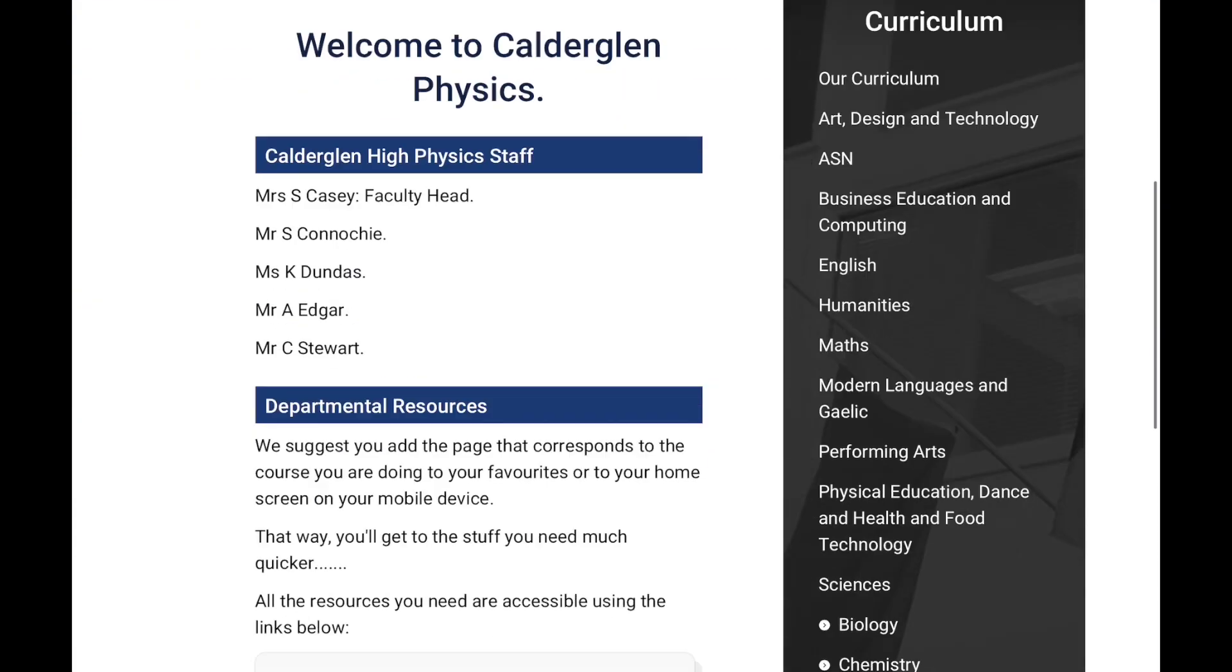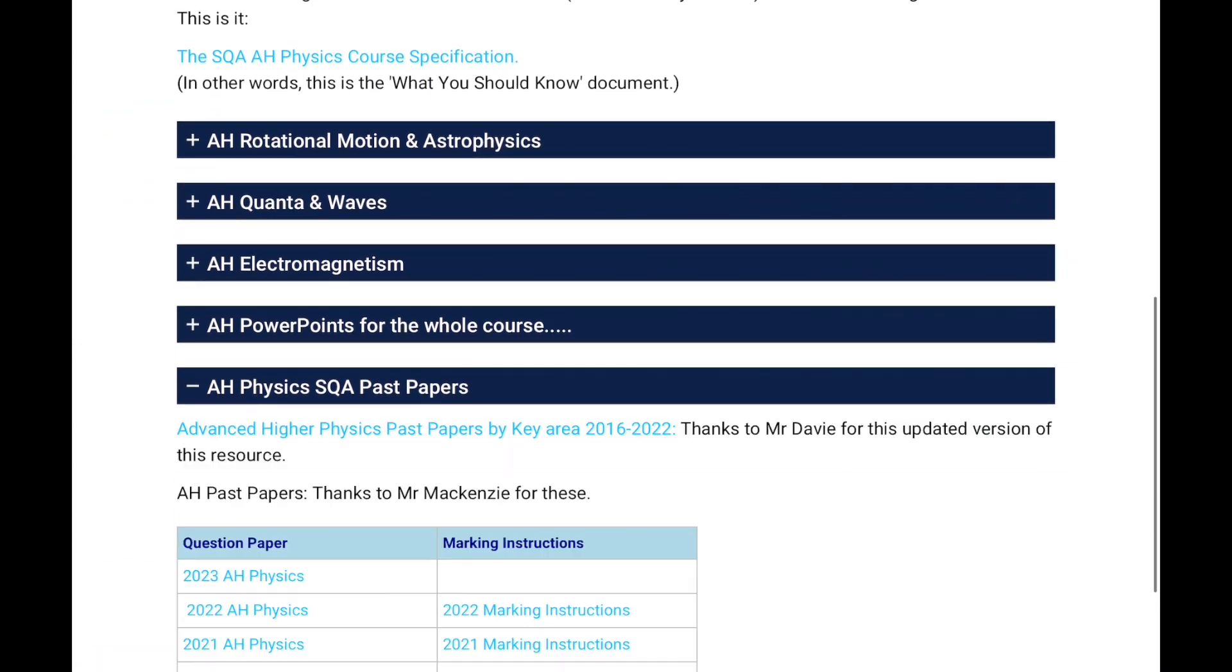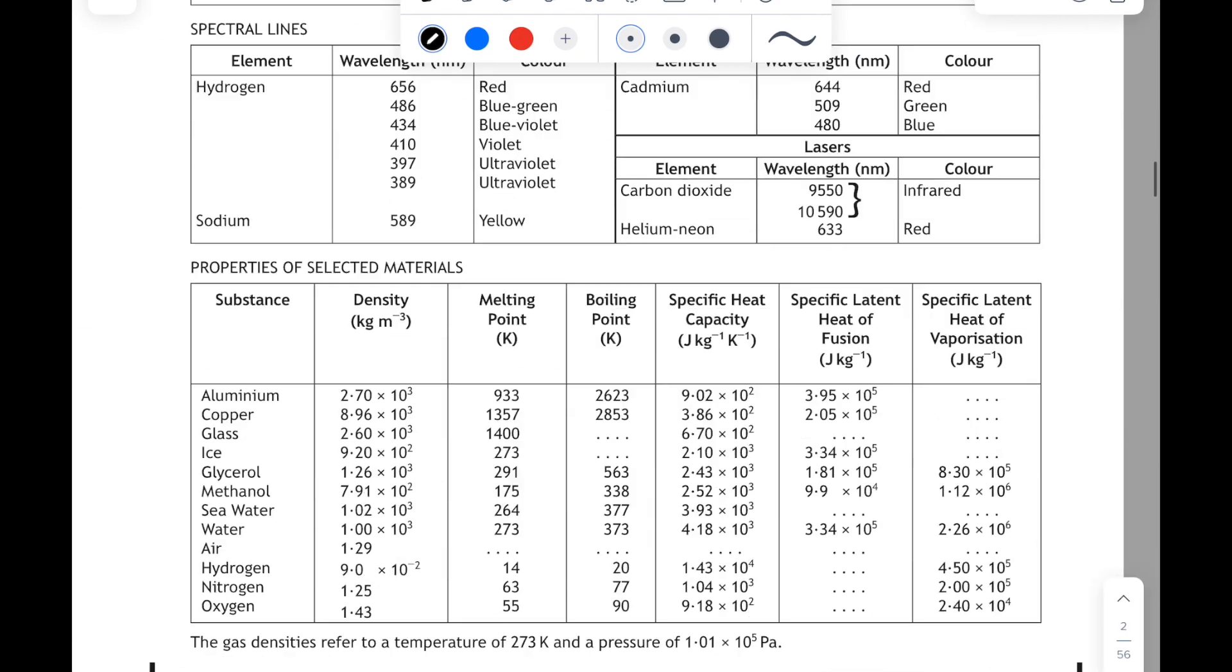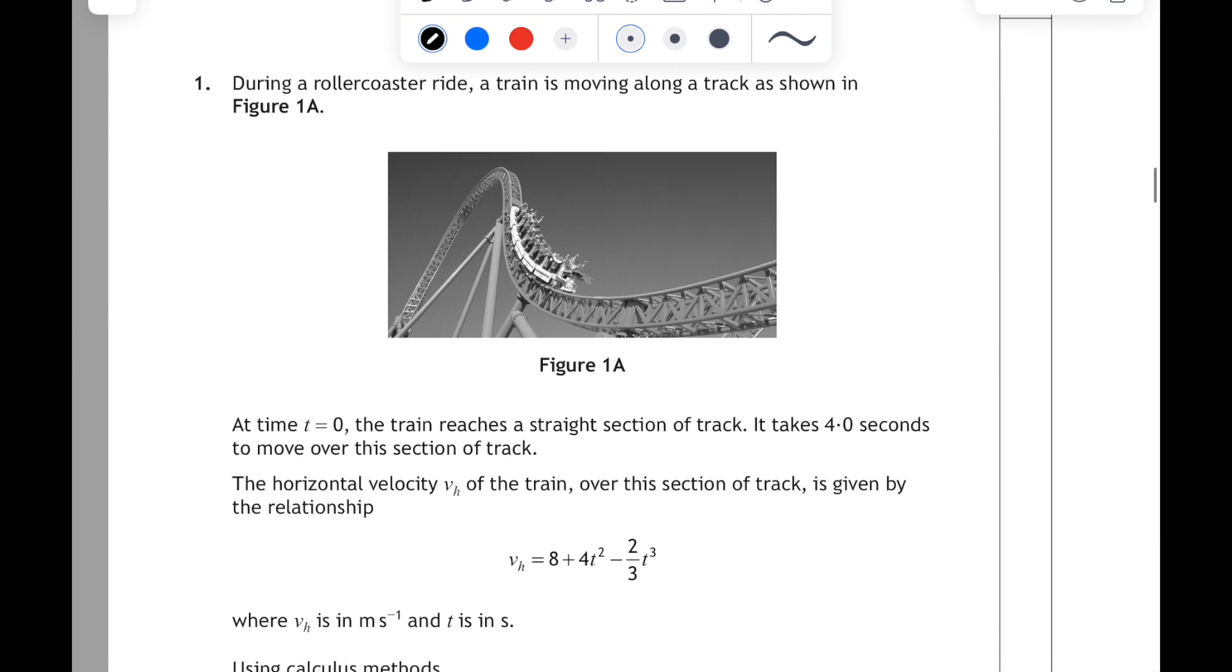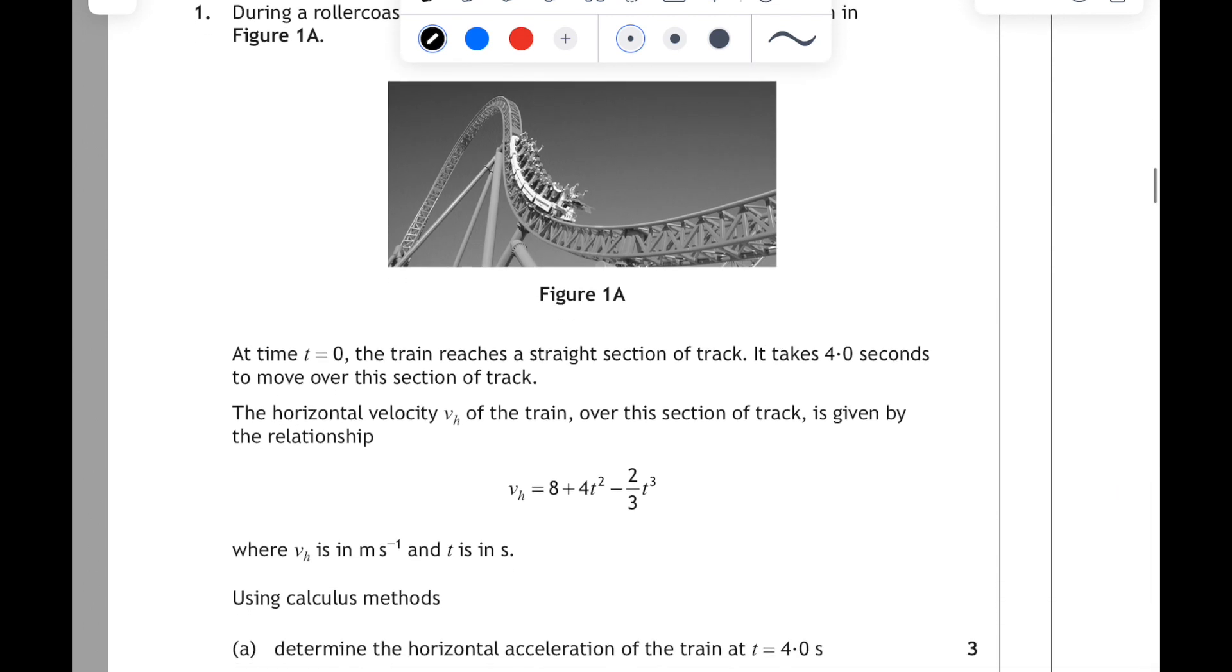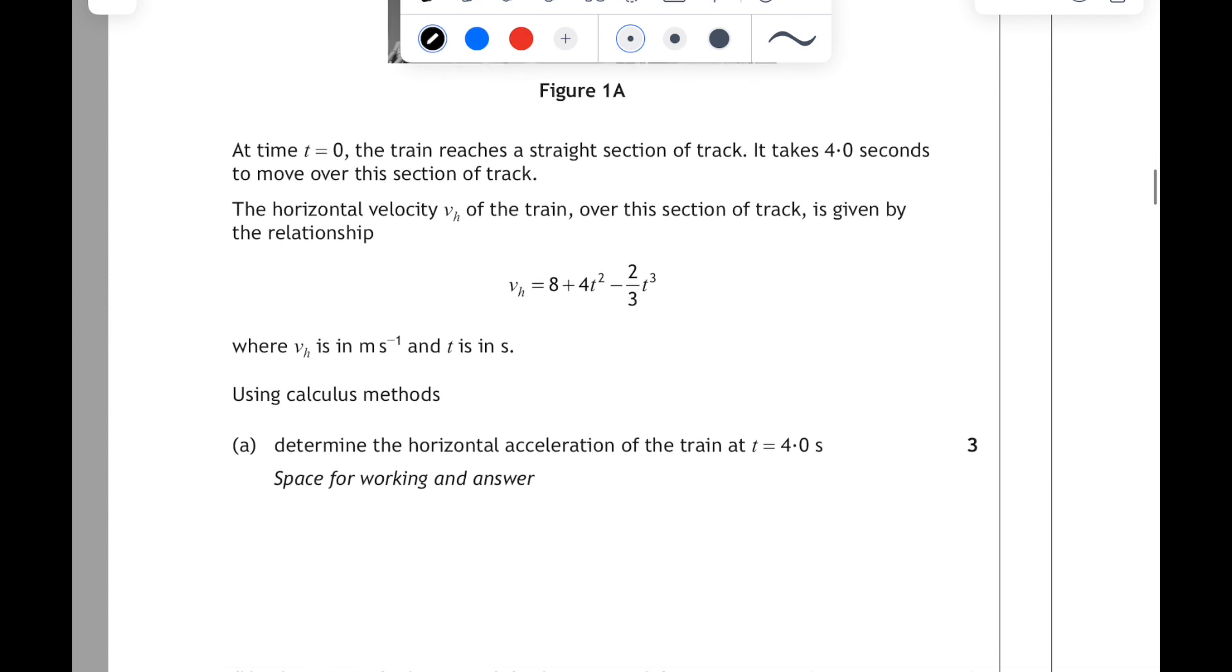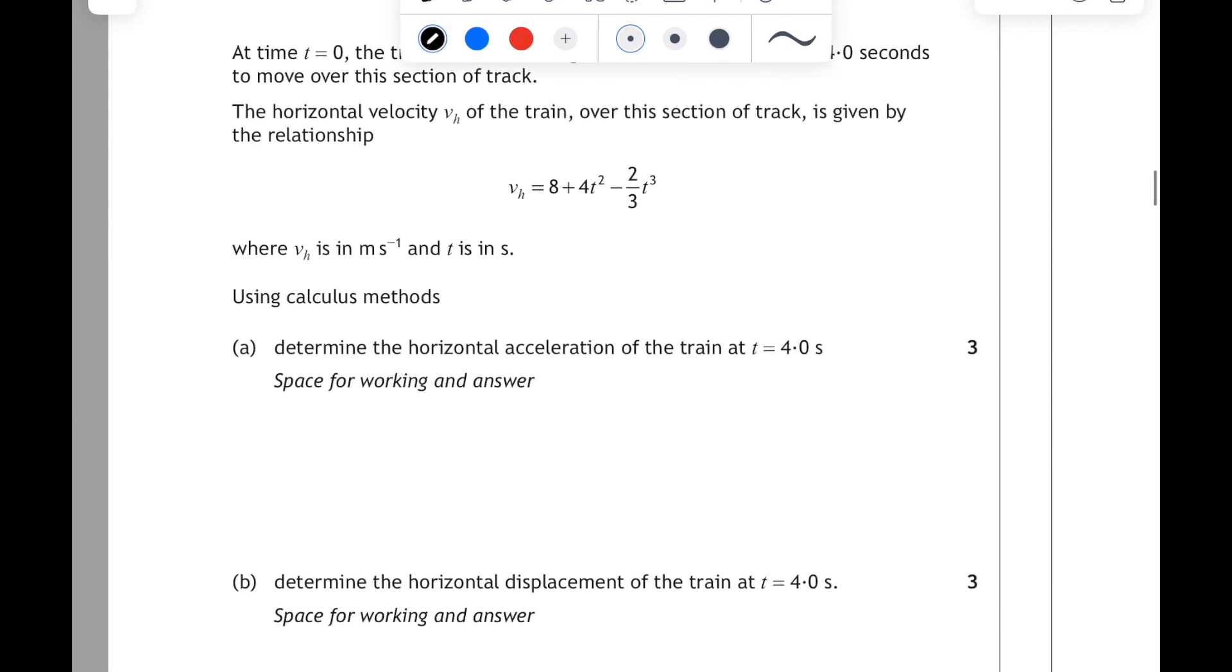Right, that was the 2022 paper. Let's have a look at the 2021 paper, question 1, and see the similarities or the differences between the questions. So this is a rollercoaster ride. And again, we're given a relationship for velocity. And using calculus methods, we have to determine the acceleration at t equals 4 seconds, and for part b, the displacement at t equals 4 seconds. So, same question, different relationship, different numbers. So same process.